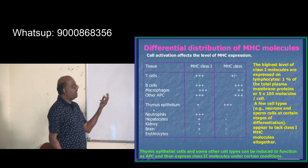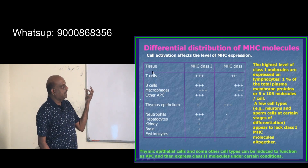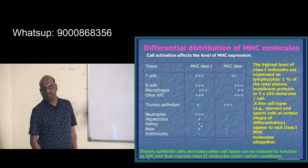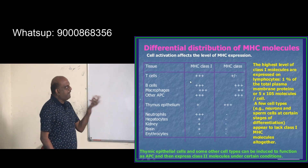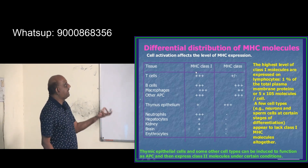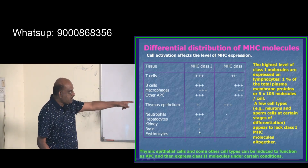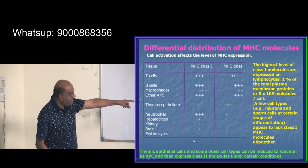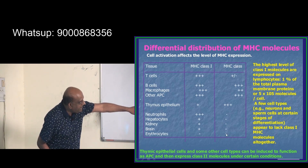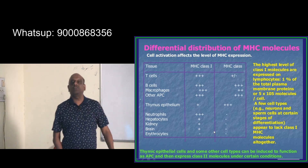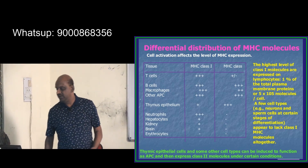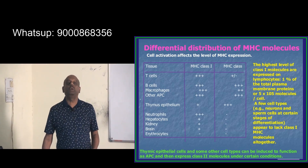Looking at the various cells involved in immunity and their MHC expression: T cells, B cells, macrophages, and antigen presenting cells predominantly have MHC class 1. Whereas erythrocytes have neither MHC class 1 nor MHC class 2. Neither of them are present on the erythrocyte — that is exactly what the examiner is looking for.